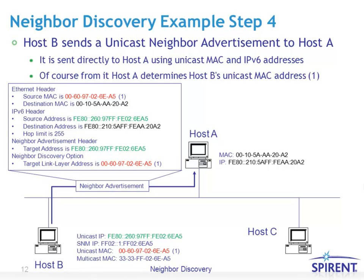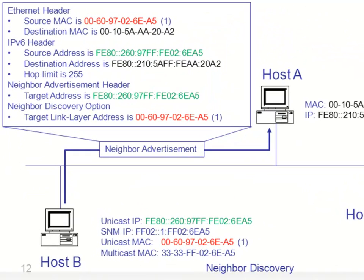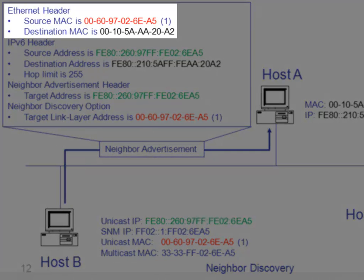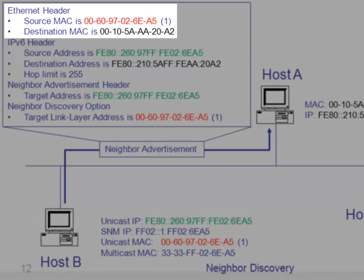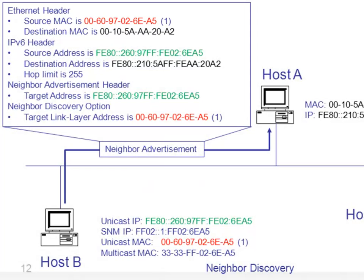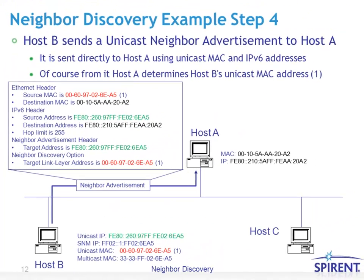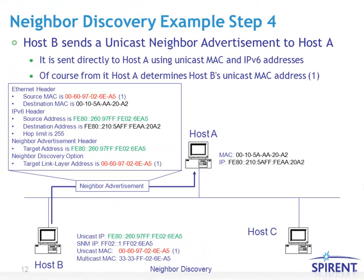Once host B has determined that the Neighbor Solicitation packet is for it, it will send a unicast Neighbor Advertisement back to host A. Now that both hosts know each other's unicast MAC addresses, they don't have to deal with multicast at either the MAC or IP layer anymore. Host B returns its burnt-in MAC address, and now both can use each other's burnt-in MAC addresses to communicate.